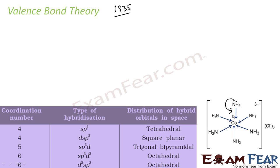The second postulate was that since all the vacant d orbitals may not have the same energy — you see d orbitals are degenerate and have the same energy, but when ligands come, the energy changes — the concept of hybridization is also used in valence bond theory.